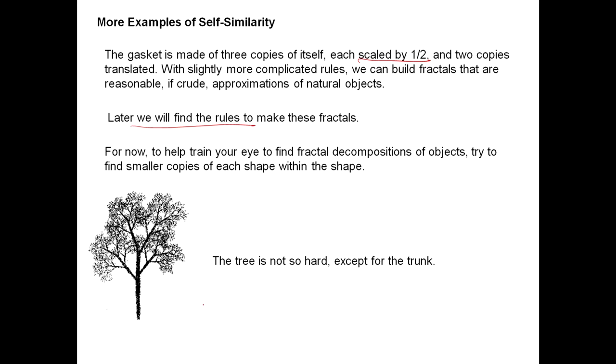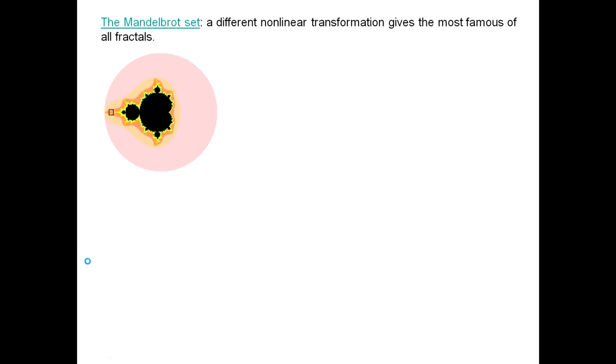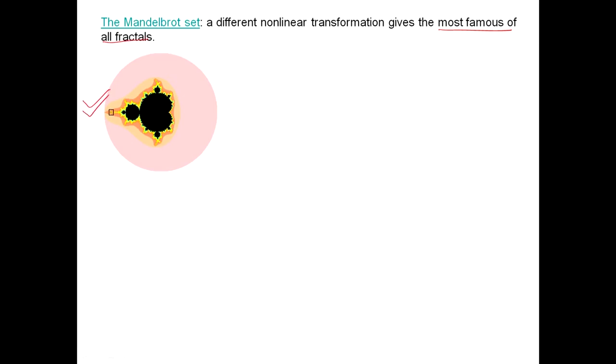Yes, with a little more complicated rules we can produce a good approximation of trees. We will learn the rules to make these fractals. For now, we will see the fractal decomposition of objects and try to find smaller copies of each shape within the shape. The tree — we can produce it, and I will probably do that in the next lecture. The trunk is a little harder, but other parts you can guess are self-similar things. The most amazing and most complex picture of fractals is called the Mandelbrot set. Benoit Mandelbrot is the person who first thought about fractals in the 1970s.